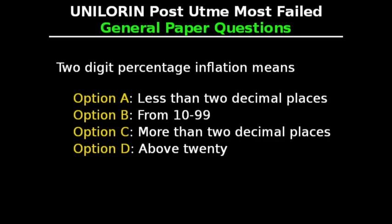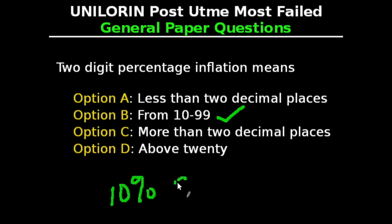General Paper Questions. This question says: Two-digit percentage inflation means — Option A: less than two decimal places, Option B: from 10 to 99, Option C: more than two decimal places, Option D: above 20. The correct answer is Option B, from 10 to 99. Two-digit percentage inflation means an increase in prices at the rate between 10% and 99%.